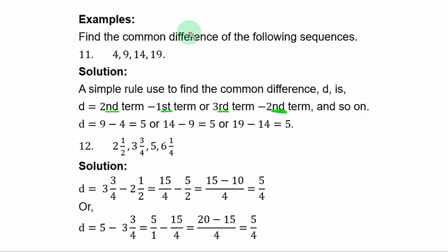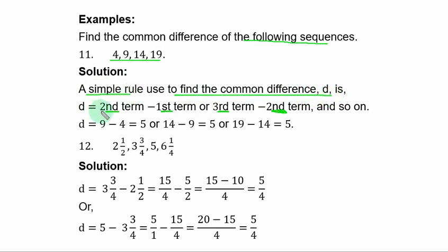Examples: find the common difference of the following sequences. Example 11: you have the sequence with terms 4, 9, 14, 19, and so on. The rule used to find the common difference D is: D equals second term minus first term, or third term minus second term, or fourth term minus third term, and so on. Any one you choose will give the same common difference.